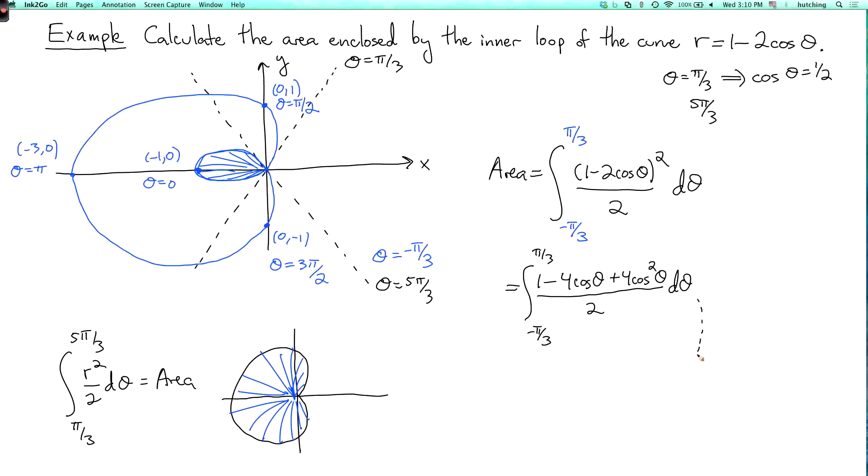And to integrate this, you can use the identity cosine squared theta equals 1 plus cosine 2 theta over 2. And I'll spare you all the details. You can do this yourself for practice if you like. And the final answer you get is pi minus 3 times the square root of 3 over 2.